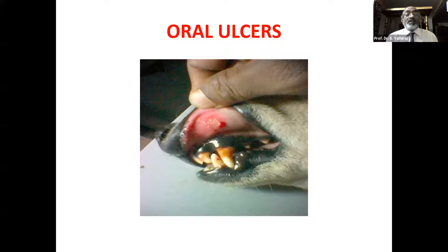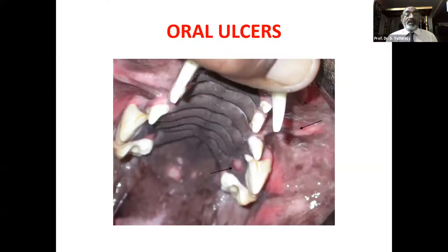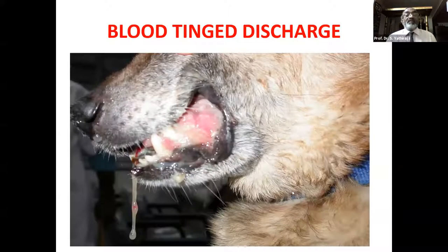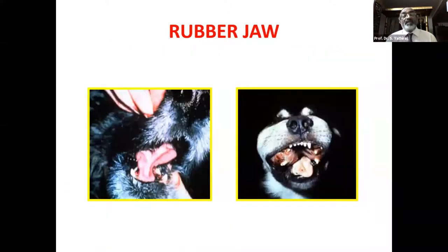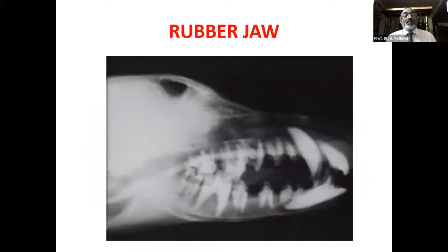These are typical oral ulcers due to uremia — bleeding points on the palate, ropy or blood-tinged saliva coming from the mouth. These are uremic symptoms. Rubber jaw — altered configuration of the mouth itself. A jaw X-ray would show osseous tissue lacking calcium, appearing rubbery in nature.